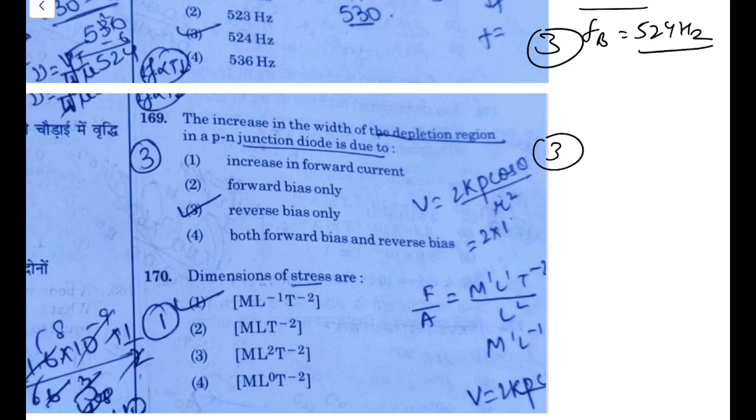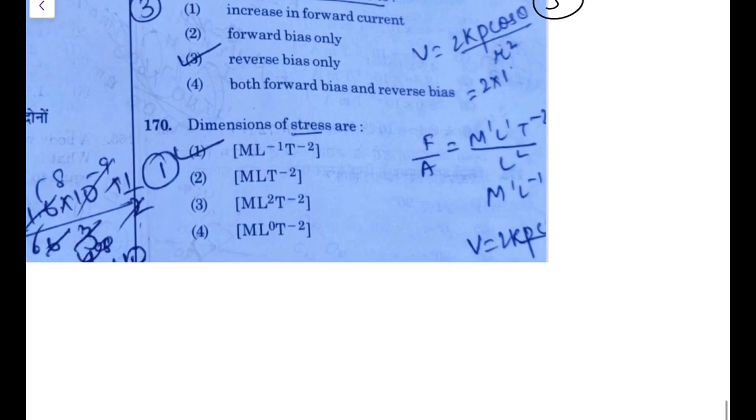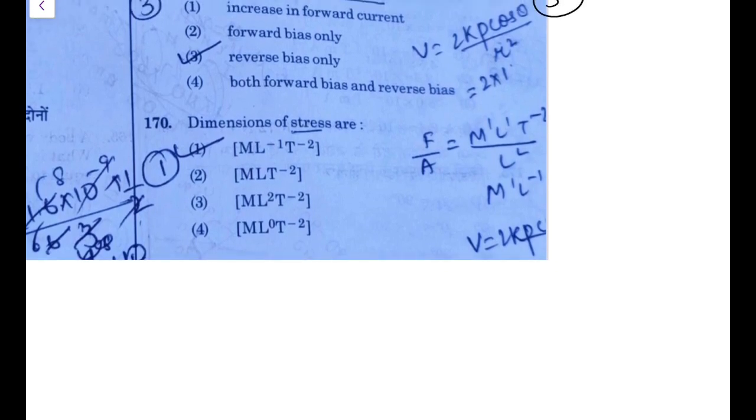The option 3: in reverse bias, the depth of the depletion region increases. Dimension of stress, that is force upon area—pressure. Pressure is force, you know, always ML T^-2 upon area which is L^2. It gives ML^-1 T^-2. That is an easy one again.